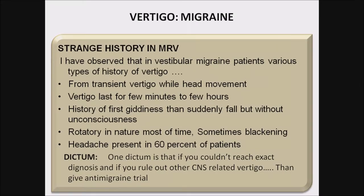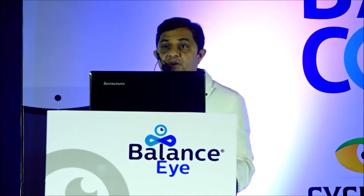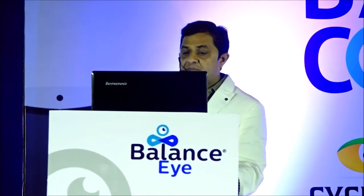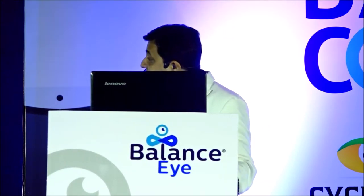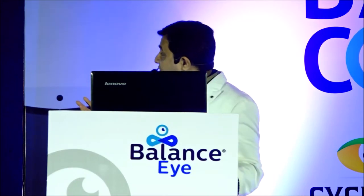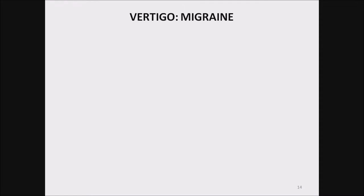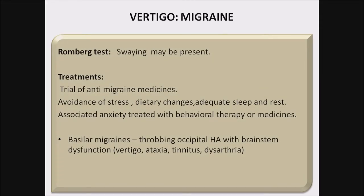In my practice I observe different types of complaints in migraine patients — from transient vertigo with head movement to vertigo lasting a few minutes to hours, history of sudden fall without unconsciousness, usually rotatory in nature, and sometimes blackout. Headache is present in 60% of patients. There is a clinical dictum: if you cannot reach an exact diagnosis and have ruled out CNS-related vertigo, give an anti-migraine trial. In my practice I succeeded with anti-migraine trials in more than 50% of such undiagnosed patients. Romberg test swaying may be present. Treatment: trial of anti-migraine medicines, lifestyle modification, and dietary changes.